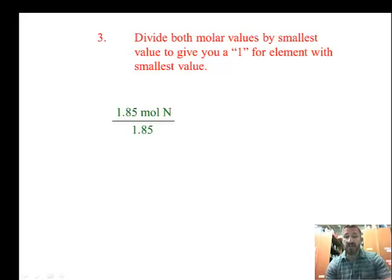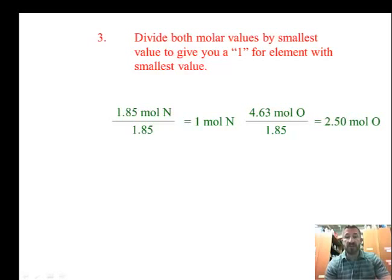So 1.85 divided by 1.85 gives us 1. And then 4.63 divided by 1.85 gives us 2.5. We want both of these numbers to be a whole number. And we notice this one is already a whole number, the nitrogen, but the oxygen is not. I want you to think about what number you'd want to multiply this by to get a whole number.